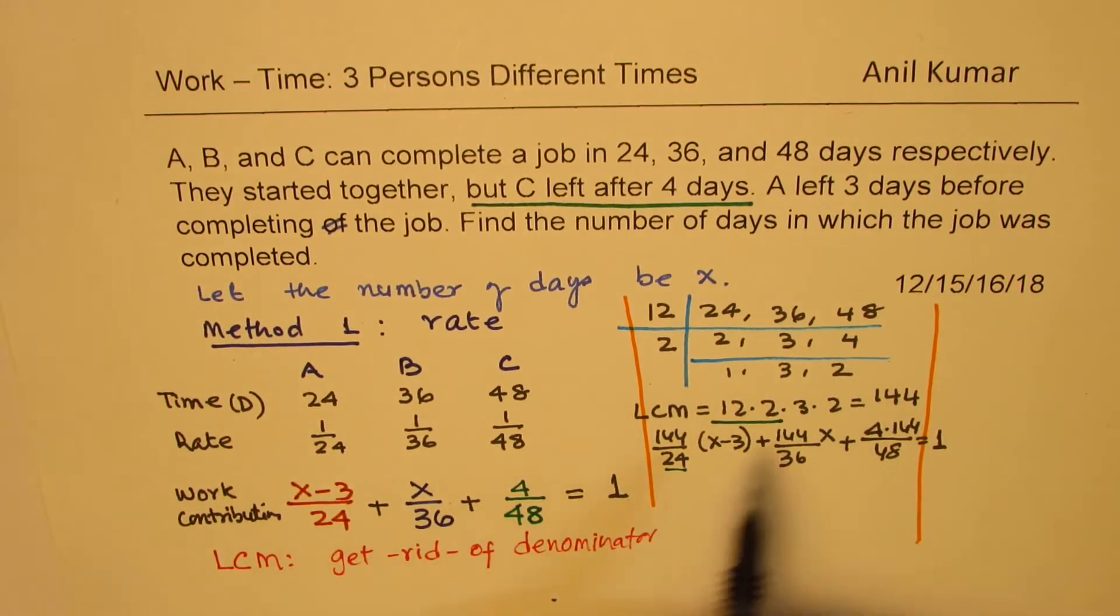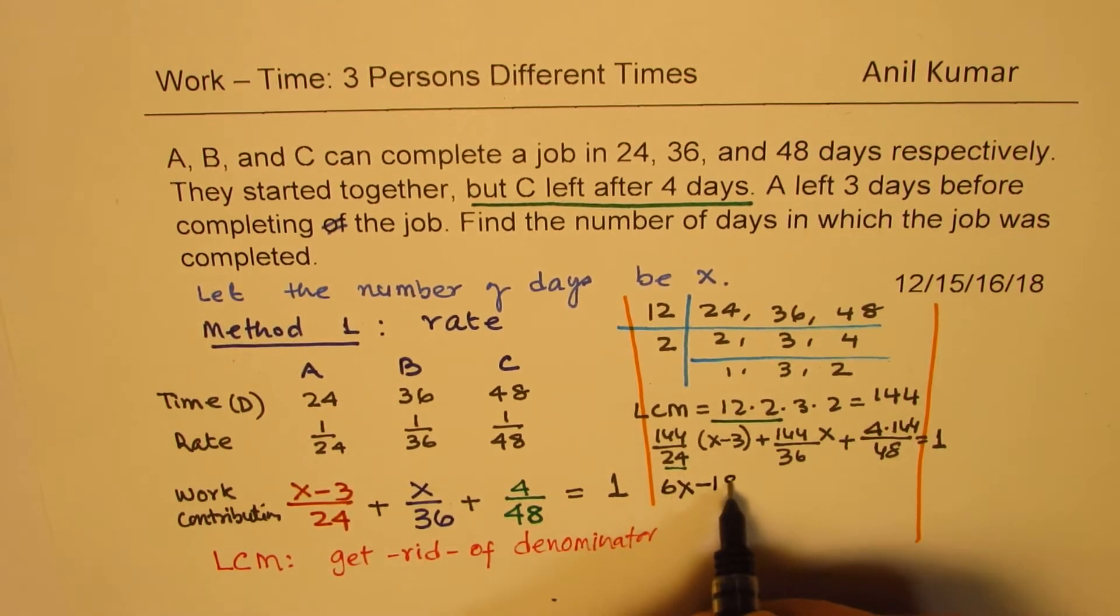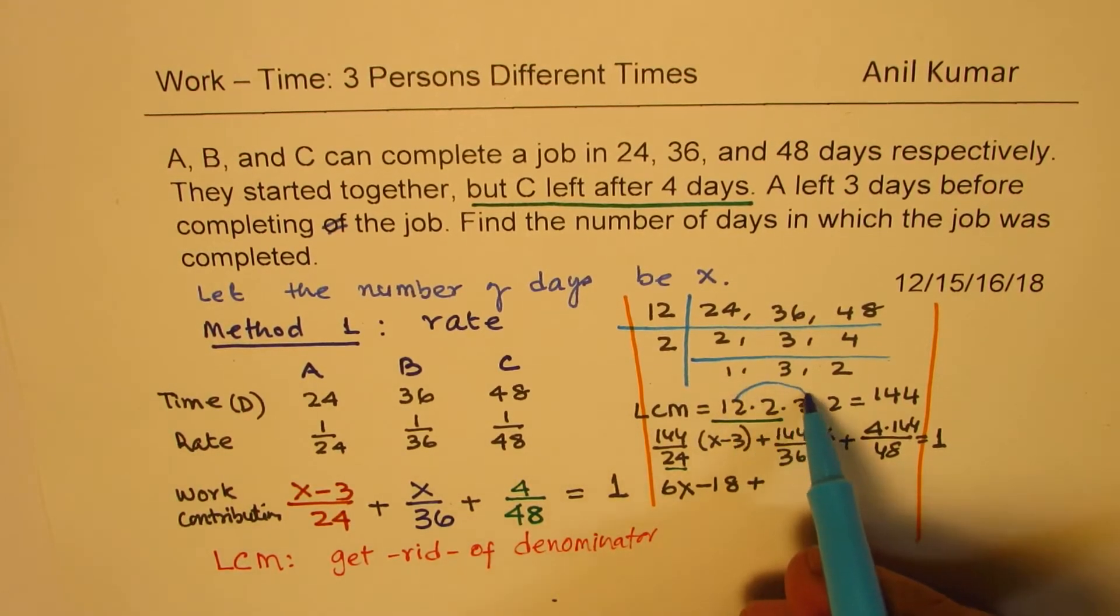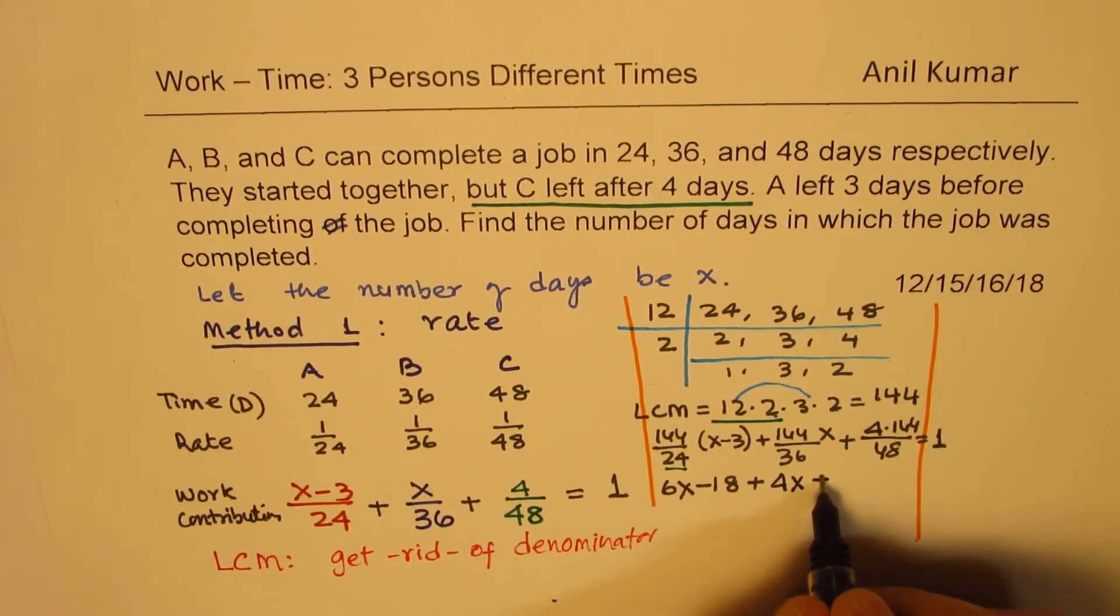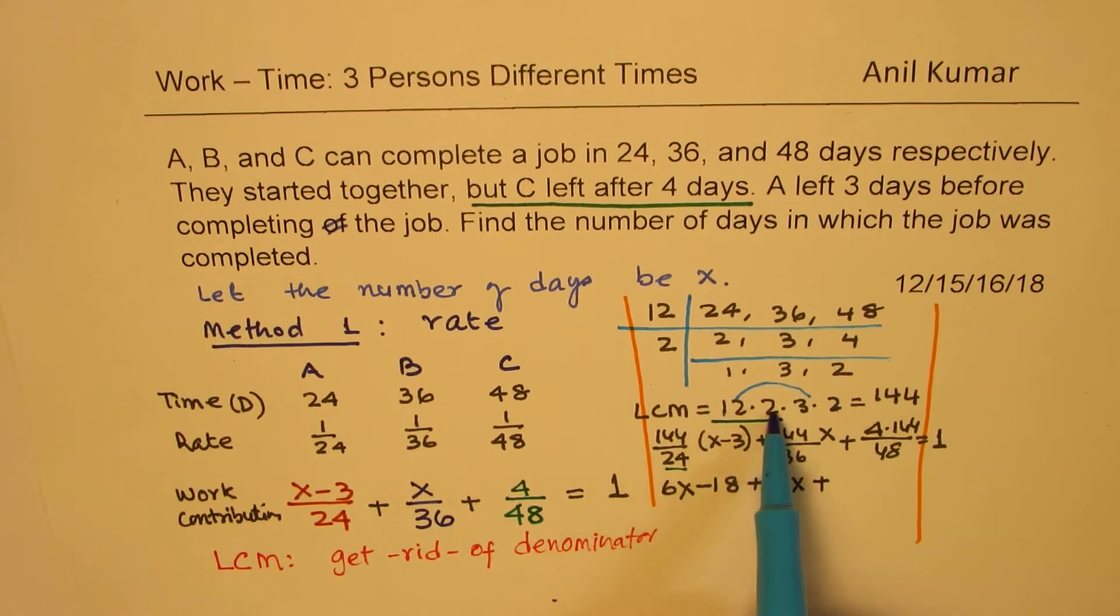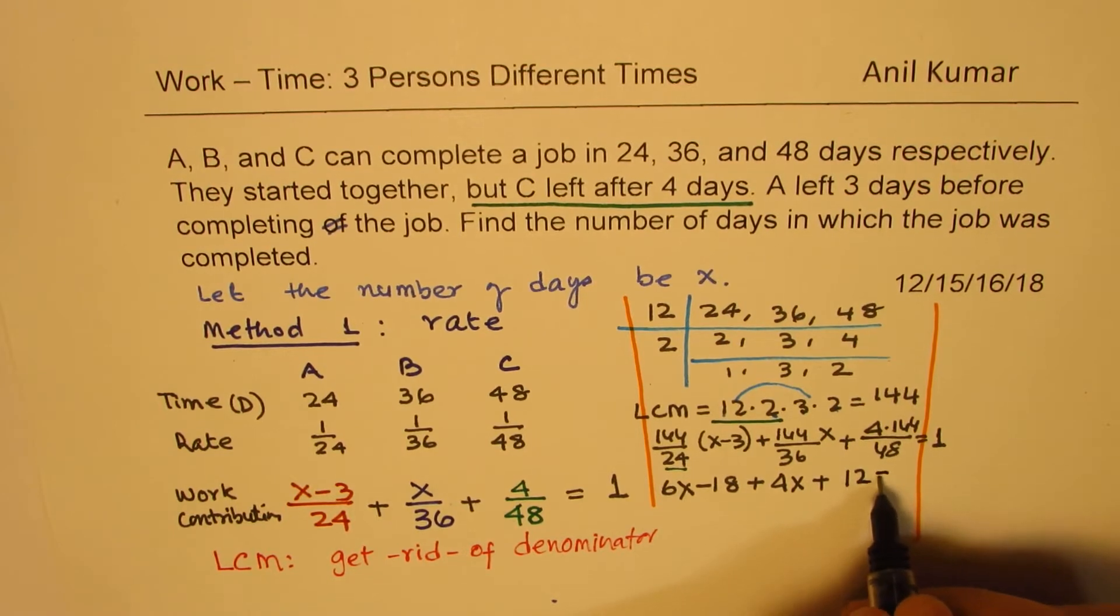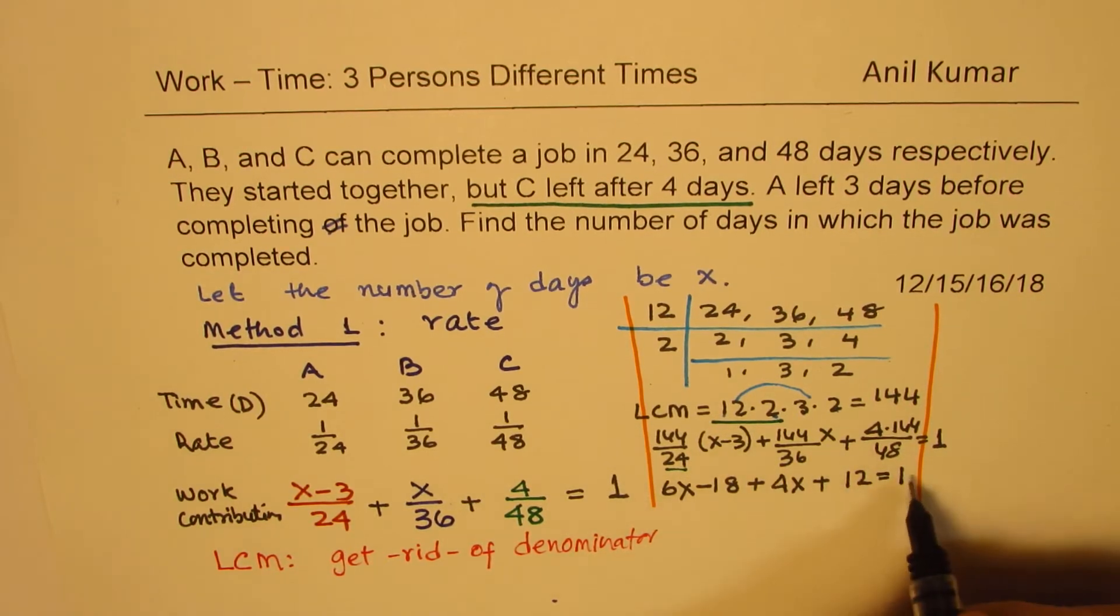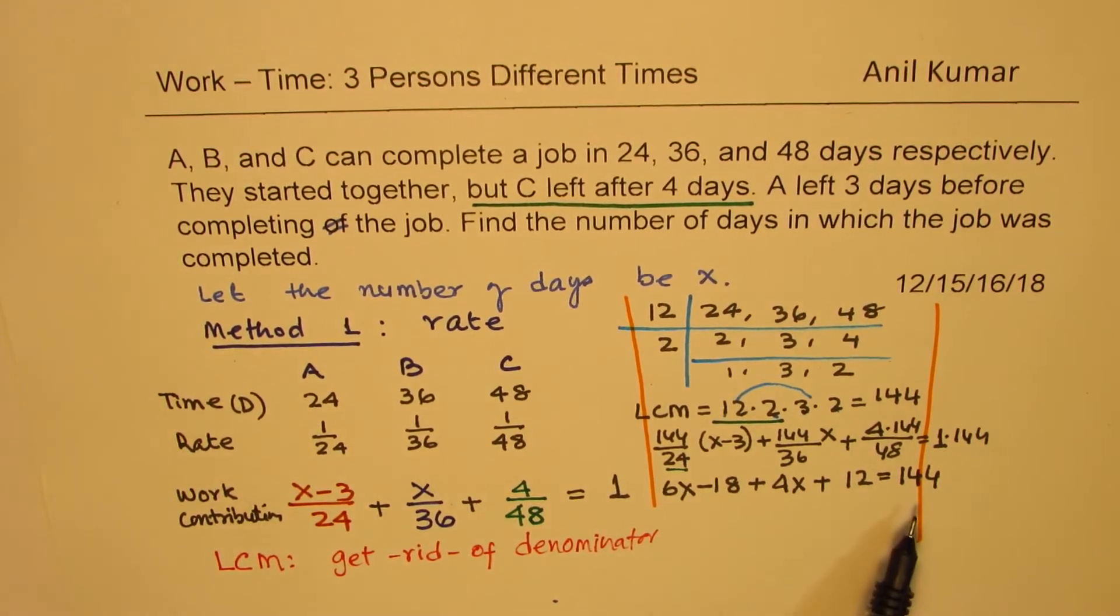Looking into this, we have to multiply this by 6. So we get 6x minus 18 plus 36 times, what is 144? Now, 12 times 3 is 36, 4 is left. So it is 4x plus 48 is 12 times 4, 3 is left. So it is 3 times 4, which is 12, which is equal to 144. We have to multiply this also by 144. So we get our equation like this.